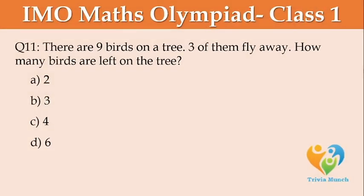There are nine birds on a tree. Three of them fly away. How many birds are left on the tree? Option A: 2, Option B: 3, Option C: 4, Option D: 6.